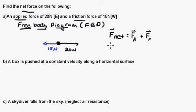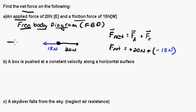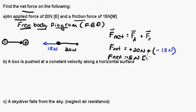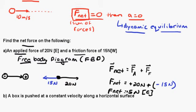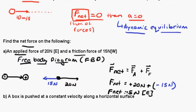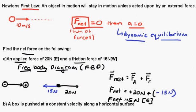The net force equals the force applied, which is positive 20 newtons, plus the frictional force, which is negative 15 newtons — negative because by our convention, anything going in the opposite direction is negative. So positive 20 plus negative 15 gives F-net equal to positive 5 newtons east. Because this object has a net force, it will be accelerating, so this is not a case of dynamic equilibrium.